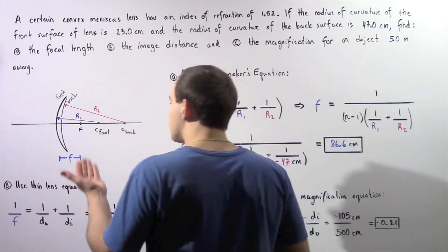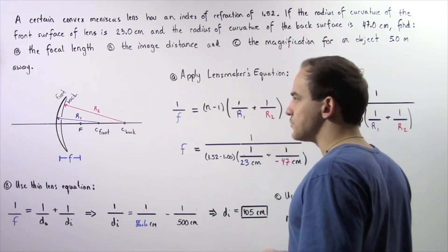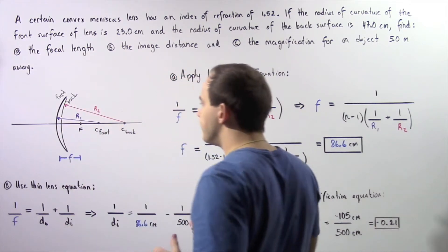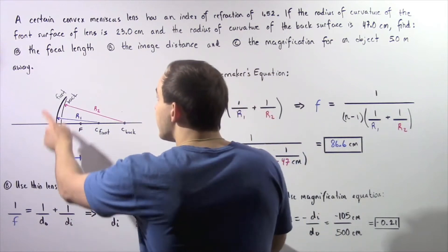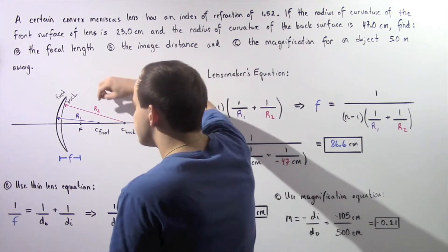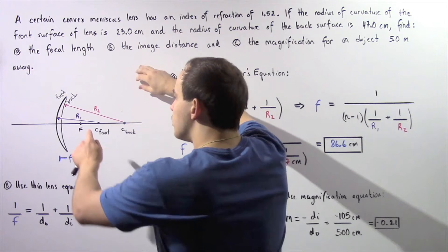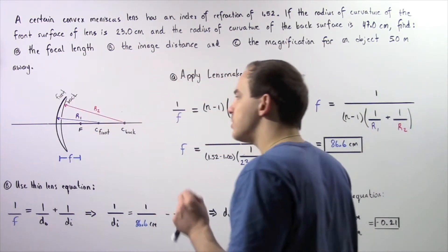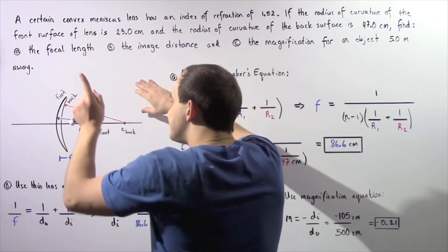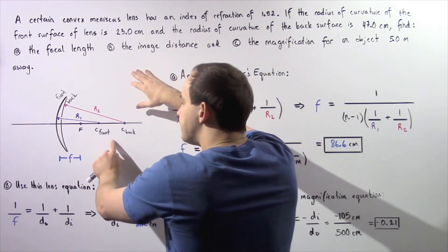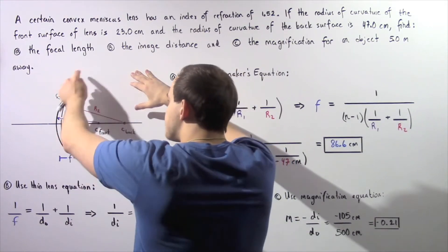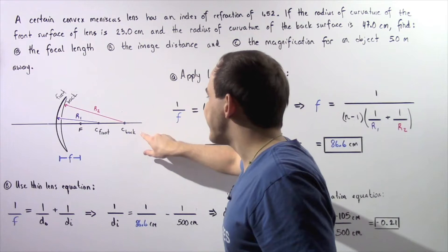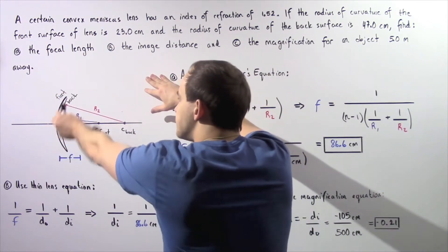Let's look at the diagram depicting our convex meniscus lens. A convex meniscus lens has a convex front surface and a concave back surface. R1 is the radius of curvature of the front surface — the distance from the front surface to the center of curvature C-front. R2 is the radius of curvature of the back surface — the distance from the center of curvature of the back surface to the actual back surface of the lens.